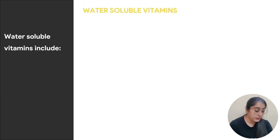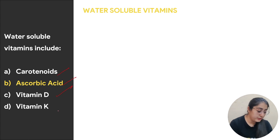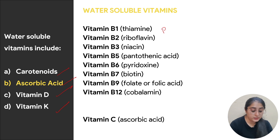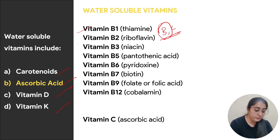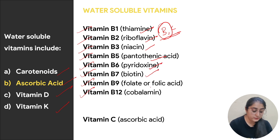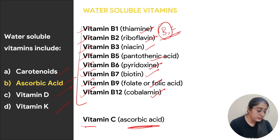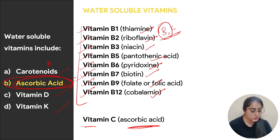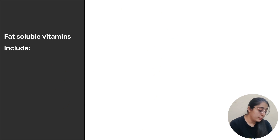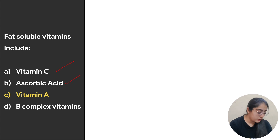Next: water soluble vitamins include — options are carotenoids, ascorbic acid, vitamin D, or vitamin K. The water soluble vitamins are vitamin B and vitamin C. The vitamin B family includes B1 through B12: thiamine, riboflavin, niacin, pantothenic acid, pyridoxin, biotin, folate, and cobalamin. Vitamin C is ascorbic acid. Carotenoids, vitamin D, and vitamin K are fat soluble. Therefore the correct answer is ascorbic acid.